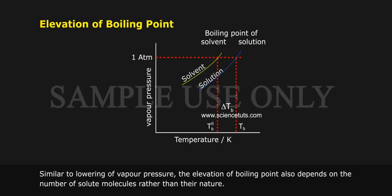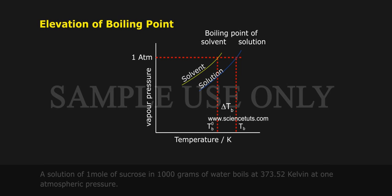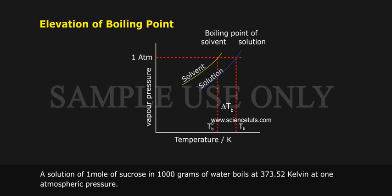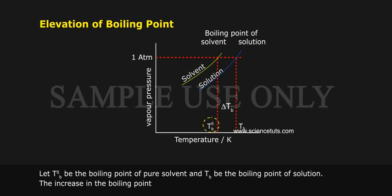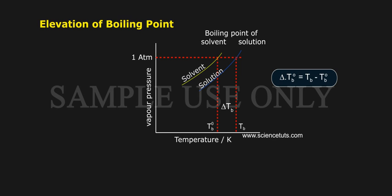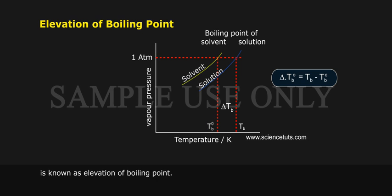Similar to lowering of vapour pressure, the elevation of boiling point also depends on the number of solute molecules rather than their nature. A solution of 1 mole of sucrose in 1000 grams of water boils at 373.52 Kelvin at 1 atmospheric pressure. The vapour pressure curve for the solution lies below the curve for pure water. The diagram shows that delta Tb denotes the elevation of boiling point. Let Tb0 be the boiling point of the pure solvent and Tb be the boiling point of the solution. Then delta Tb = Tb − Tb0, known as the elevation of boiling point.